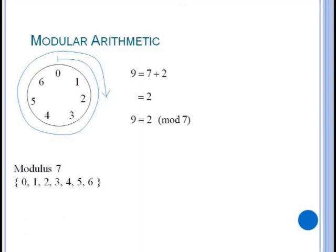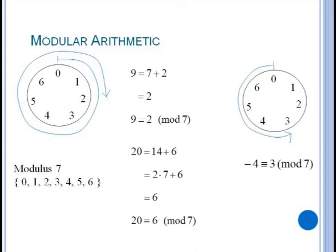So for instance the length of nine wraps around zero and then two more units ending at two. So we say that nine is equivalent to two mod seven. The number twenty will wrap around zero after seven units and then again after fourteen and then end up at six. So twenty is equivalent to six mod seven. We could just as easily handle negative integers by wrapping in the opposite or counterclockwise direction. Thus negative four would wrap back around to three and again we say that negative four is equivalent to three mod seven.